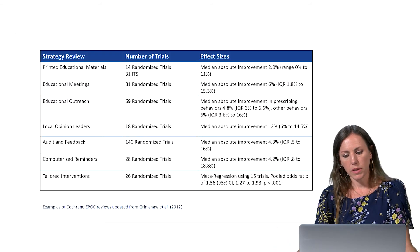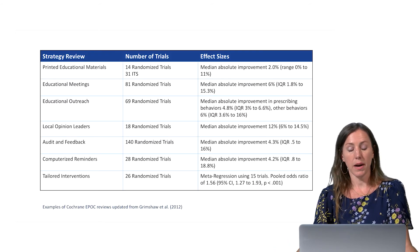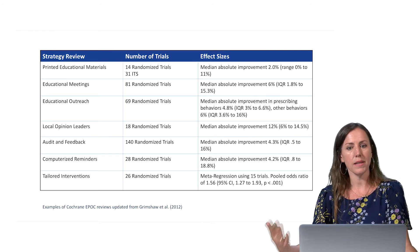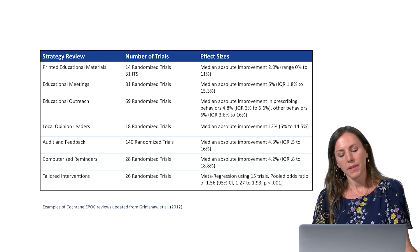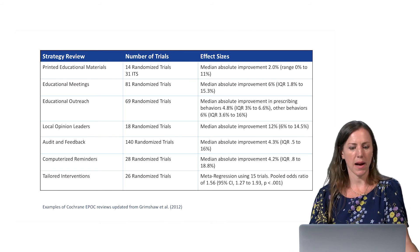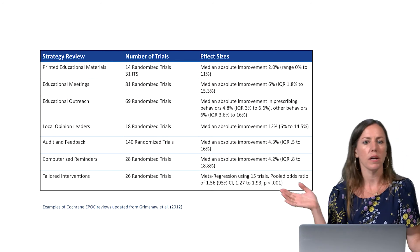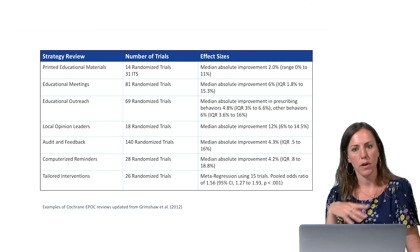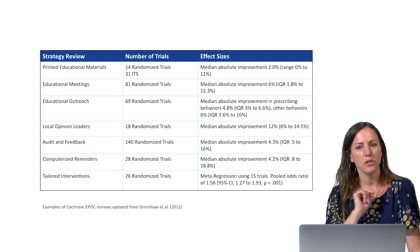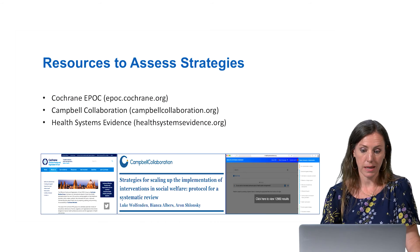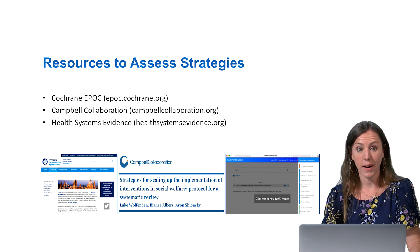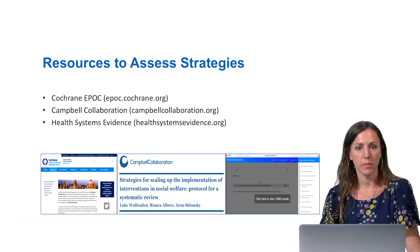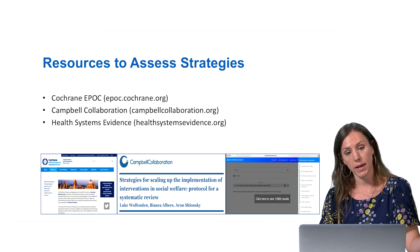We already know a lot about different implementation strategies, so we're often not starting from scratch. Things like the Cochrane Review have a lot of information about the evidence base and how much impact a lot of these strategies have. You're often not starting from scratch in terms of whether or not they're effective — it's more about understanding if they're effective for your specific context and setting. These are some of those resources for finding information about effective implementation strategies if you want to justify it from a research perspective.